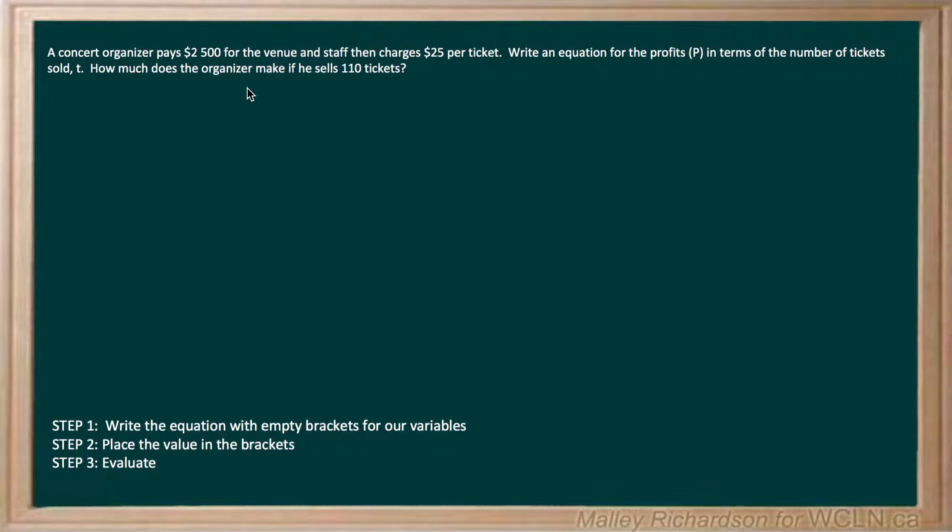Well, first let's organize what we have. We know that the concert organizer pays $2,500, so he pays that from his own pocket, so he is losing that money. And then he gains $25 per ticket that he sold, so that's gaining money.